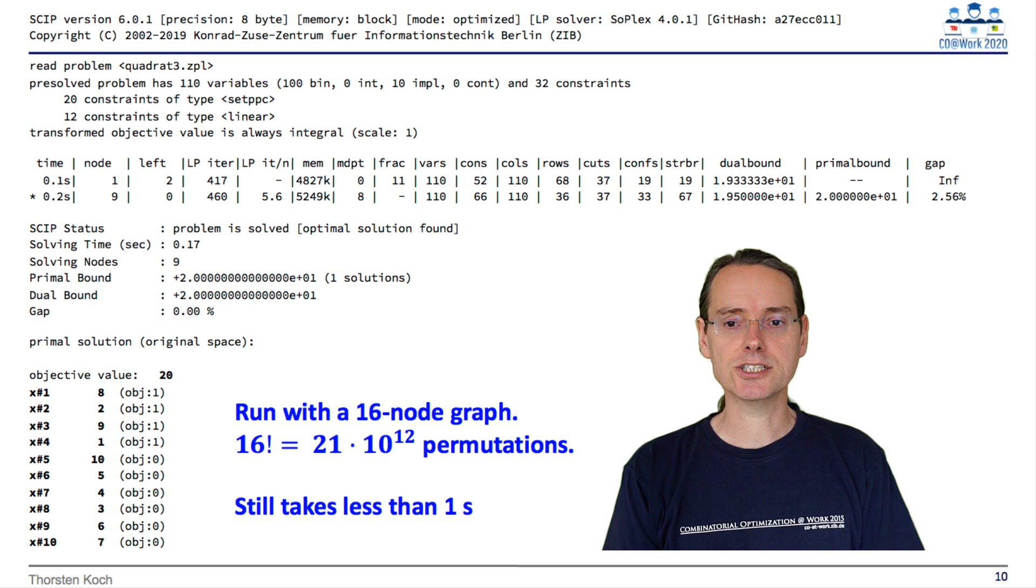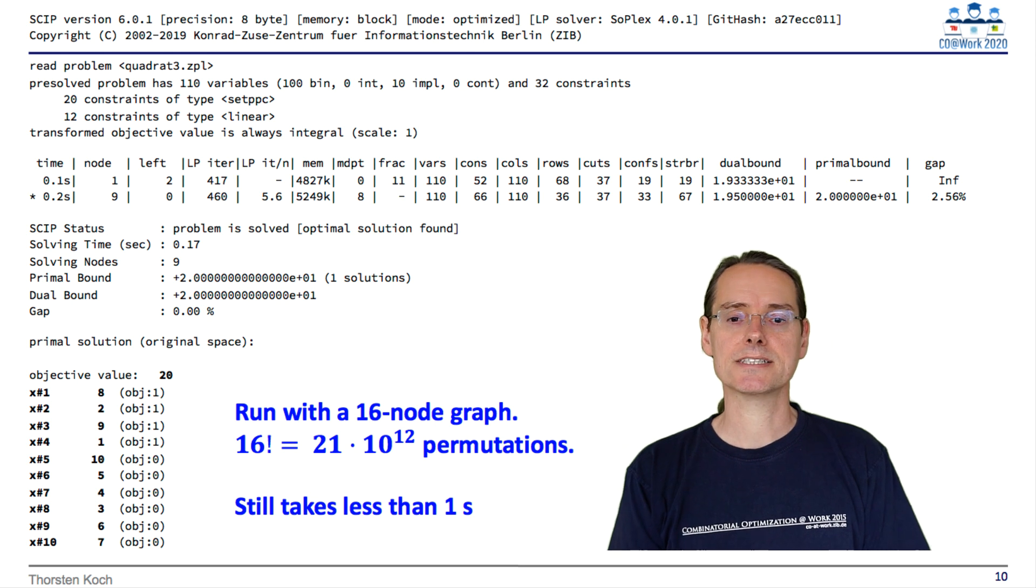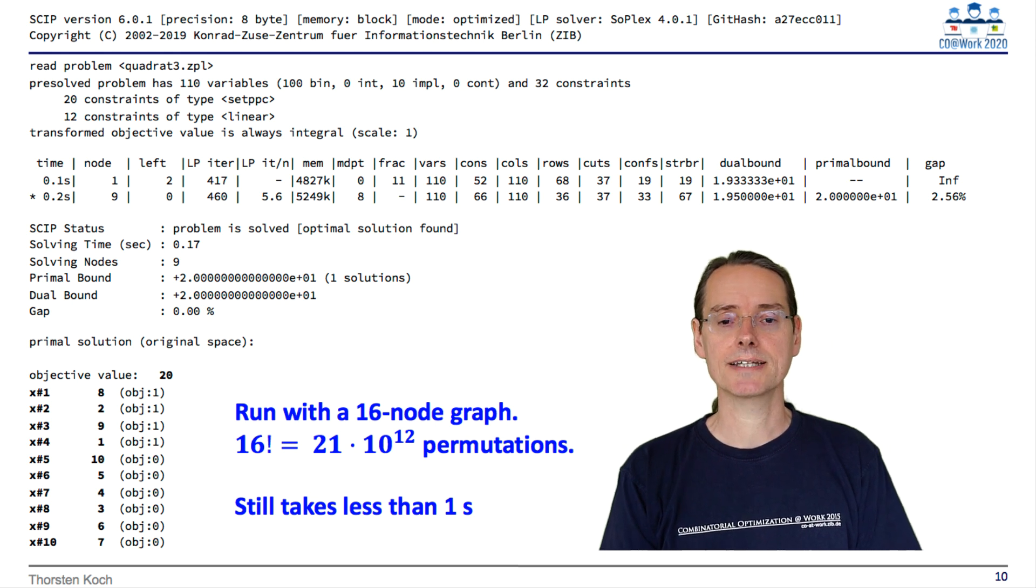If we change to maximization, the result would be 24. I also tried this with 5 squares, meaning a 16 node graph. This already has 21 trillion possibilities, and it still solves under one second. So whatever the solver does, it is not brute force search, but something more clever.